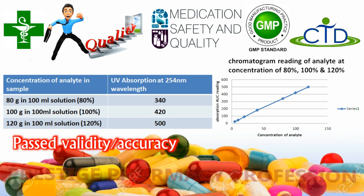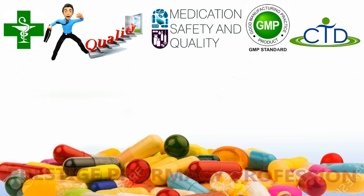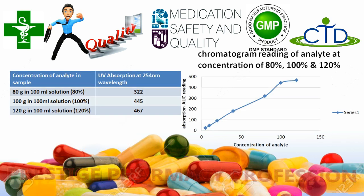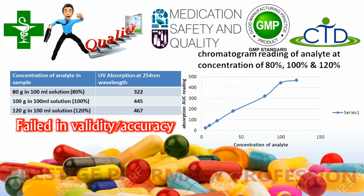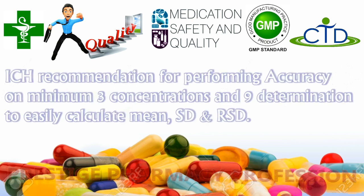For example, if an analyte sample of known concentration of 80 percent gives a UV absorption of 340, then increasing the sample concentration from 80 percent to 100 percent should increase the UV absorption to approximately 420 in a linear range, as shown in the diagram. If a linear graph is obtained with respect to concentration and UV absorption, the analytical method is acceptable and validated in terms of accuracy. If the analyte at different concentrations does not give a linear graph, the method is not correct and needs to be changed.